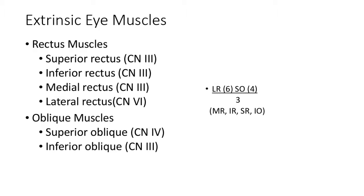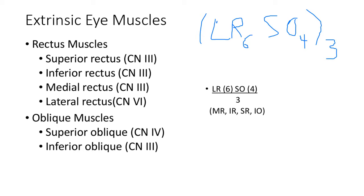A helpful mnemonic is LR6SO4 — lateral rectus is innervated by cranial nerve six (abducens), superior oblique is innervated by cranial nerve four (trochlear), and all remaining eye muscles are innervated by cranial nerve three (oculomotor).